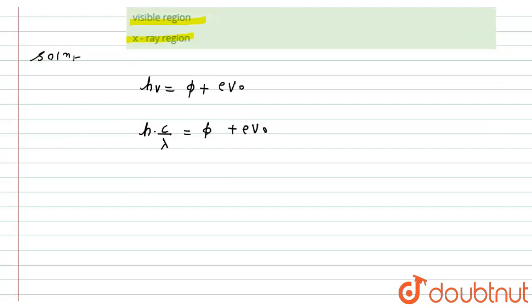From here, we can write H into V can be given as c divided by λ equals φ plus eV₀. According to the question, we have to find here the λ. So from here, the value of λ will be equals to Hc divided by φ plus eV₀.